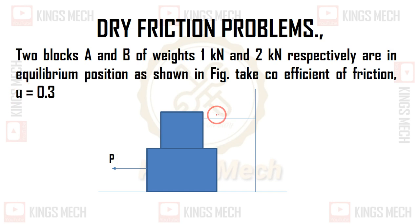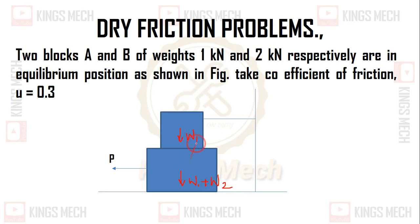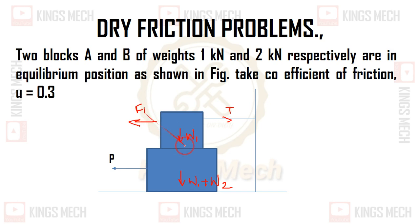Regarding the first block, we have W1 acting at the center. For the second block, we have two loads: W1 and W2. We have two loads acting. This is your tension. In the block, there is friction force, so F1. In the load, the reaction support R1 acts upward.